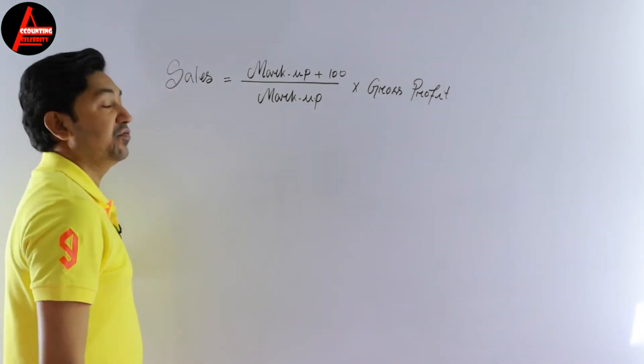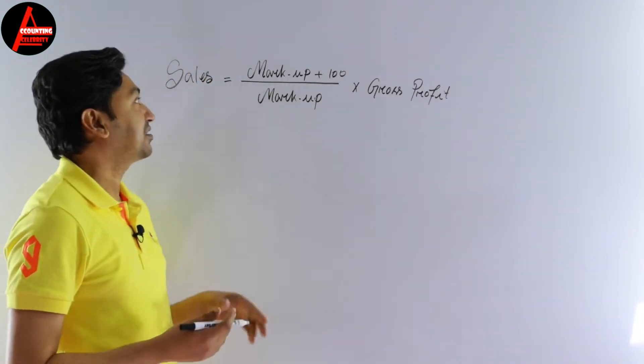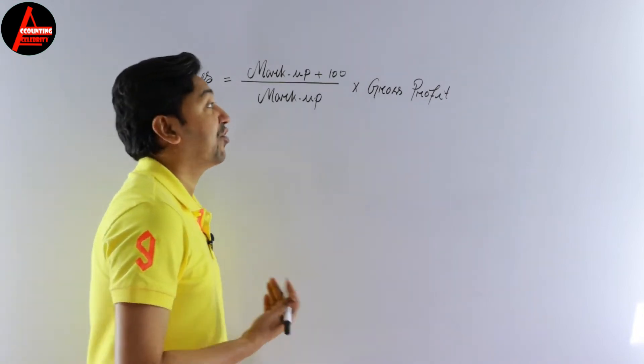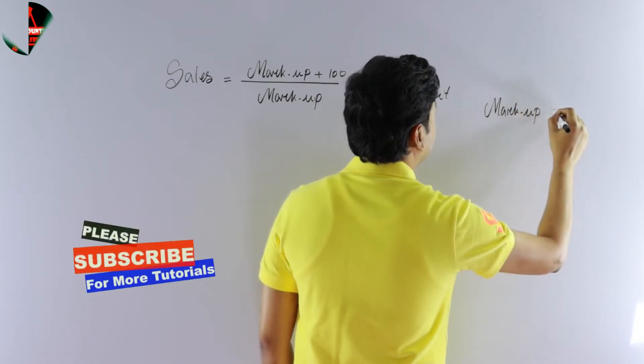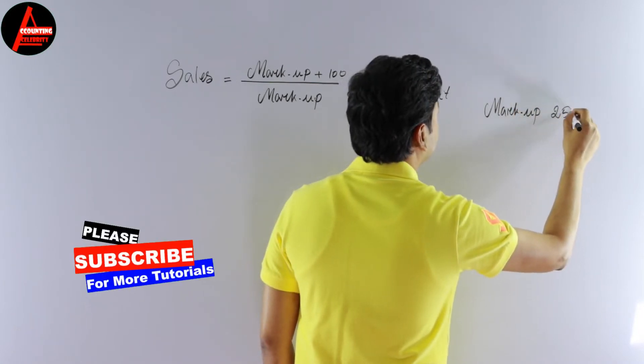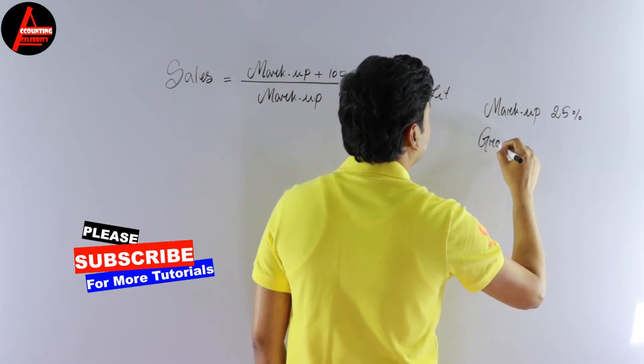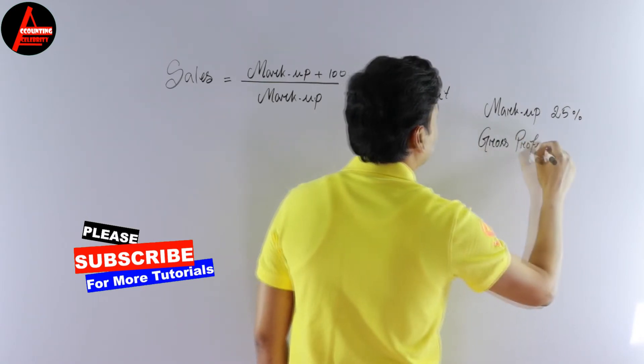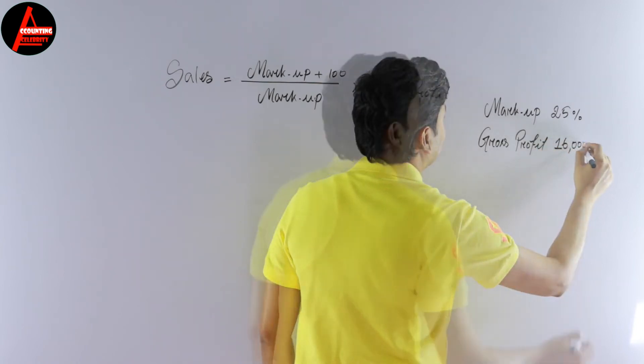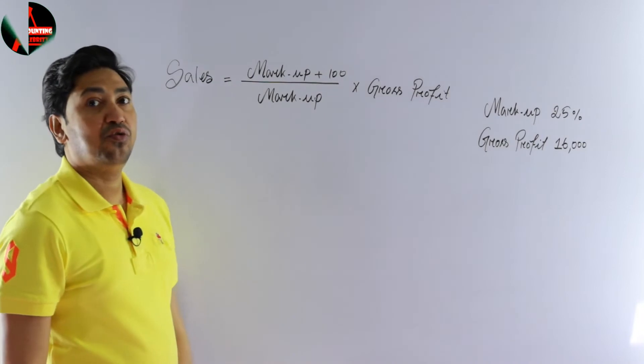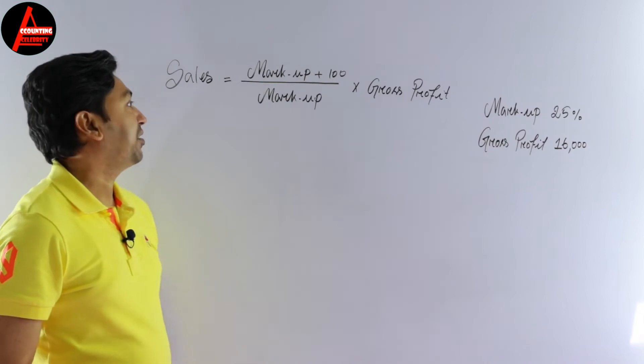If you know this formula you can calculate your selling price easily. So for example, in the question you have markup is 25 percent and you have gross profit is $16,000.